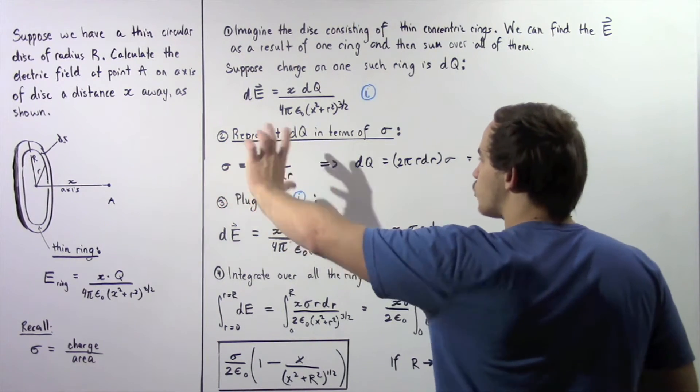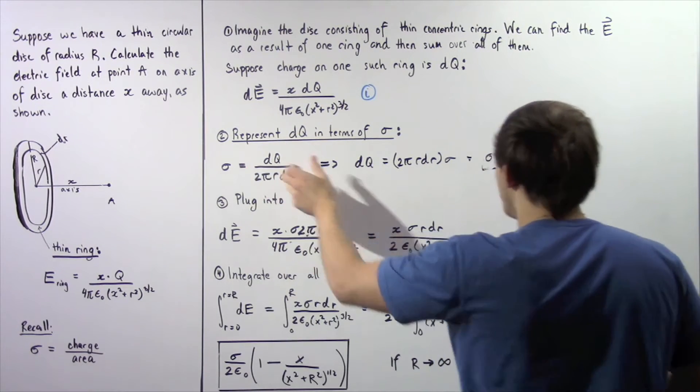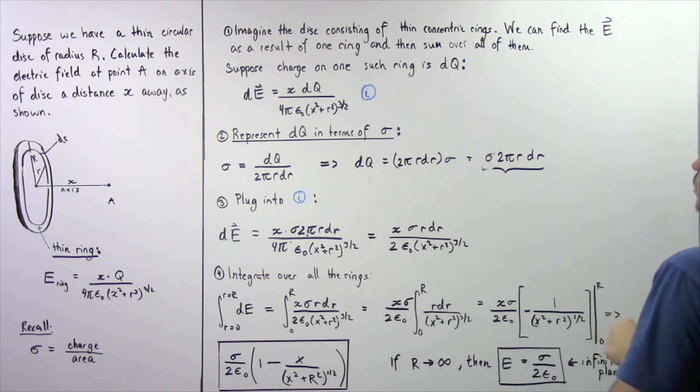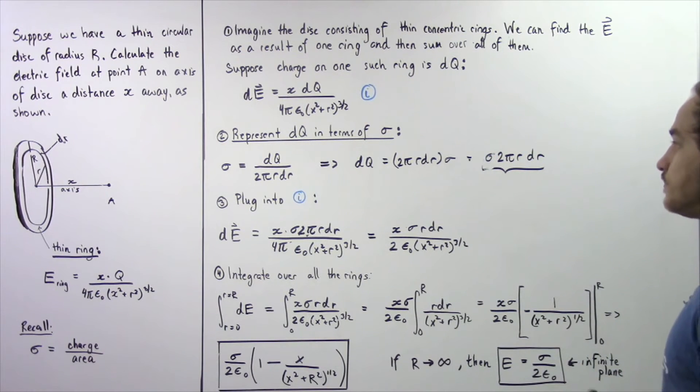So we take this equation, rearrange it, and solve for dq. And we see that dq is equal to sigma multiplied by 2 pi r multiplied by dR.